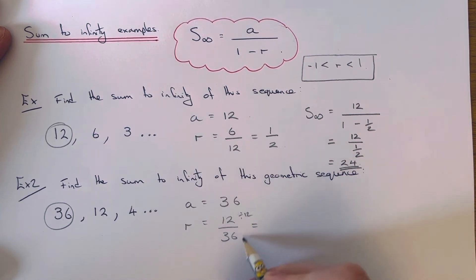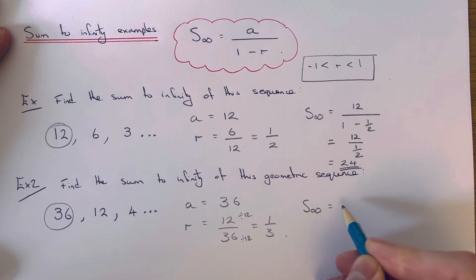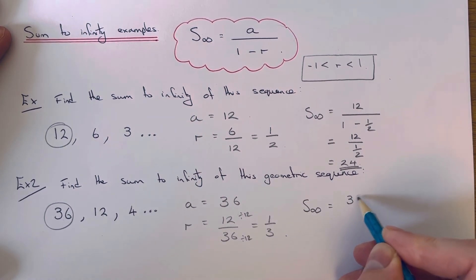So we can simplify this fraction. If we divide it by 12, that will be one third. So again, we just substitute our numbers into the formula above. So it'd be 36 over one minus a third.